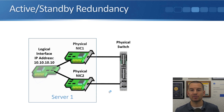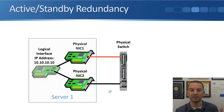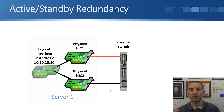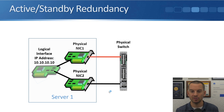Looking at the active standby redundancy diagram, I've got my physical server with two physical network cards. I give it that one IP address, 10.10.10.10, on that logical interface. In our example, all traffic is going out of that top port — it's only if the top port fails that it will fail over to the bottom port. When that happens, the switch will learn that the MAC address for that server has moved to the bottom port. So you just configure the switch with a normal access port for your VLAN — no special switch configuration is needed.